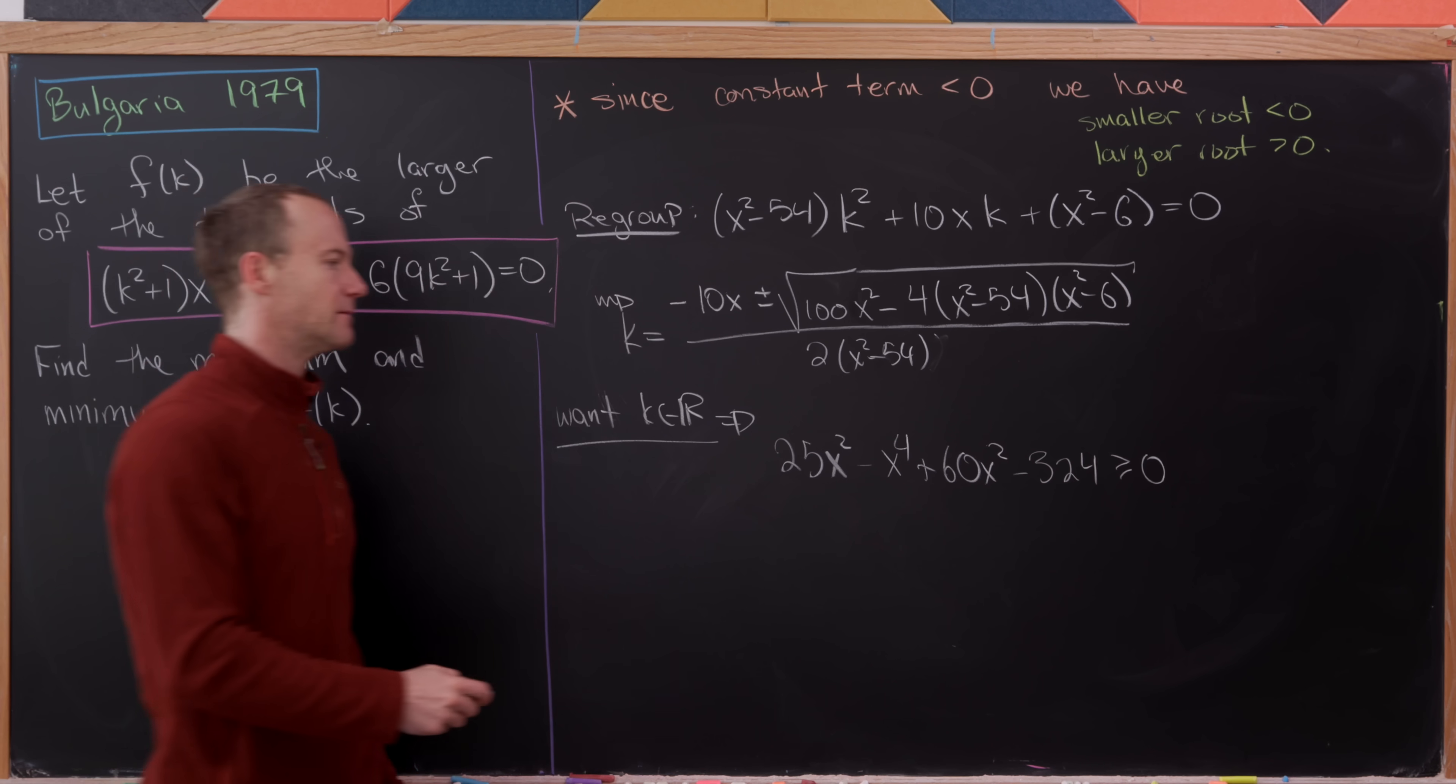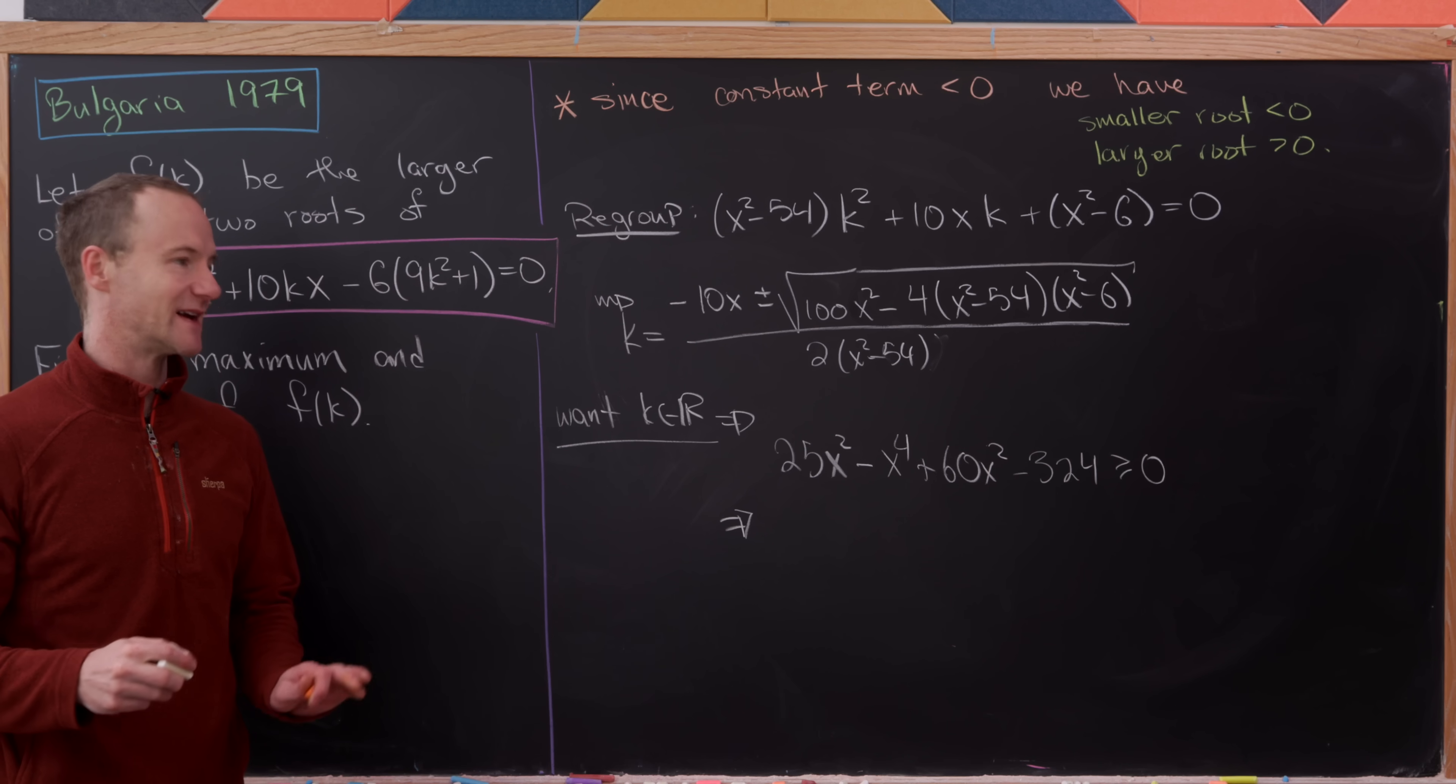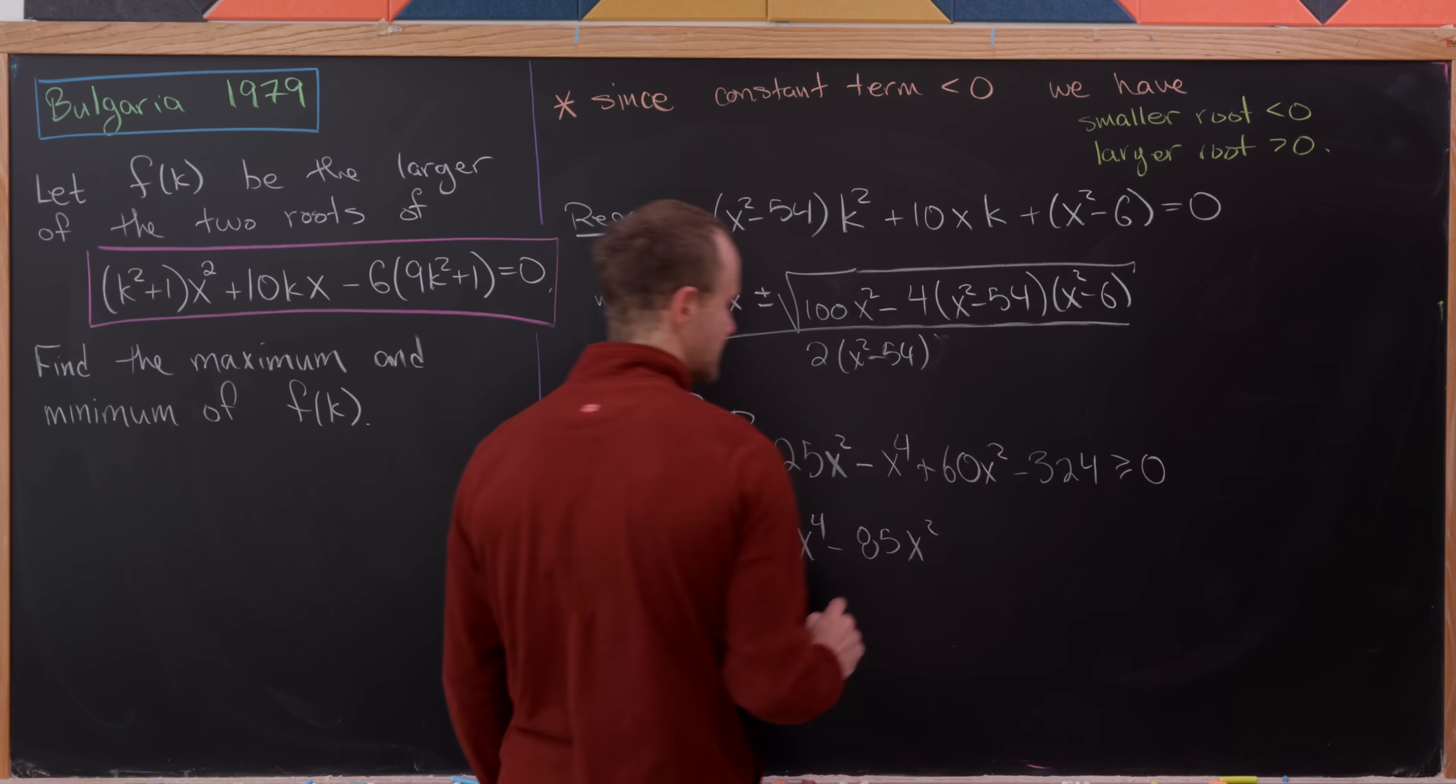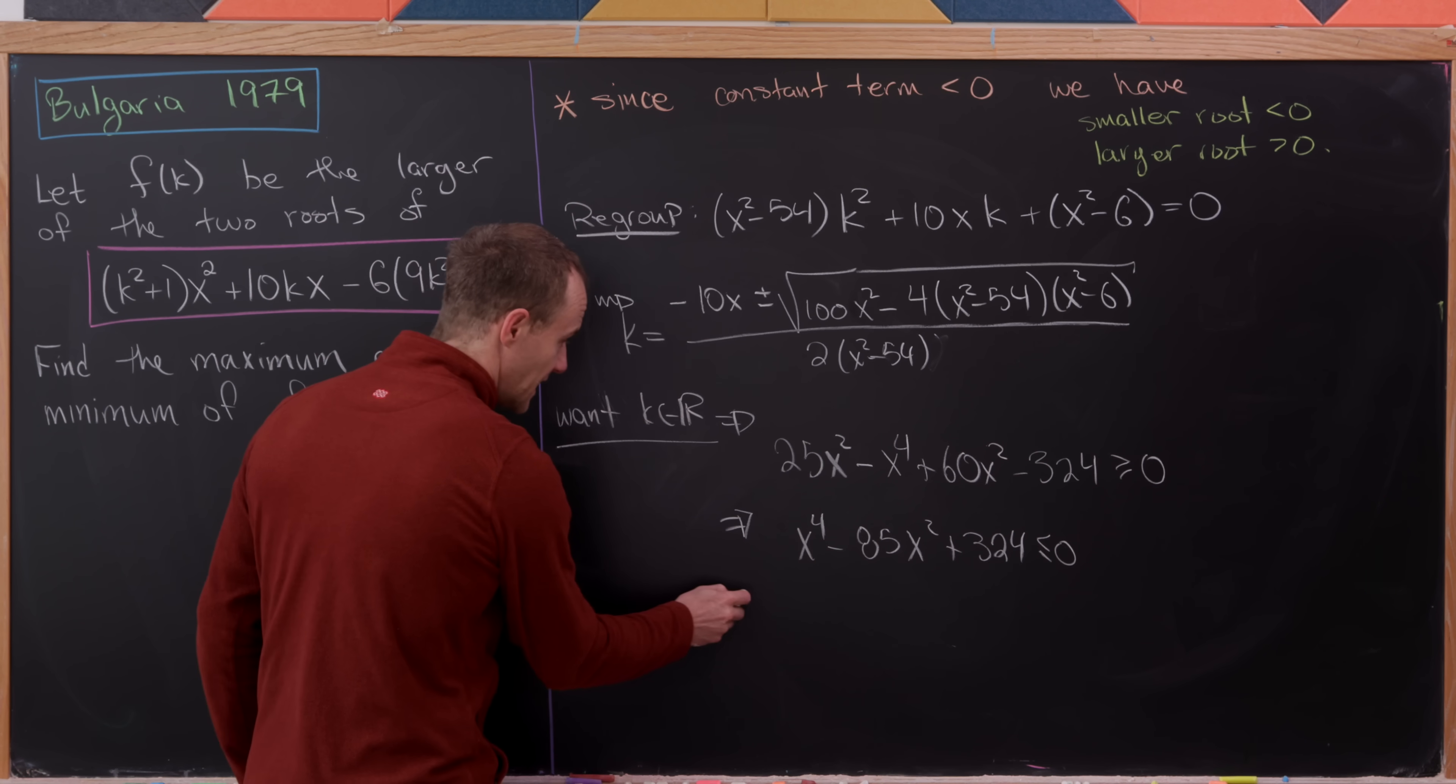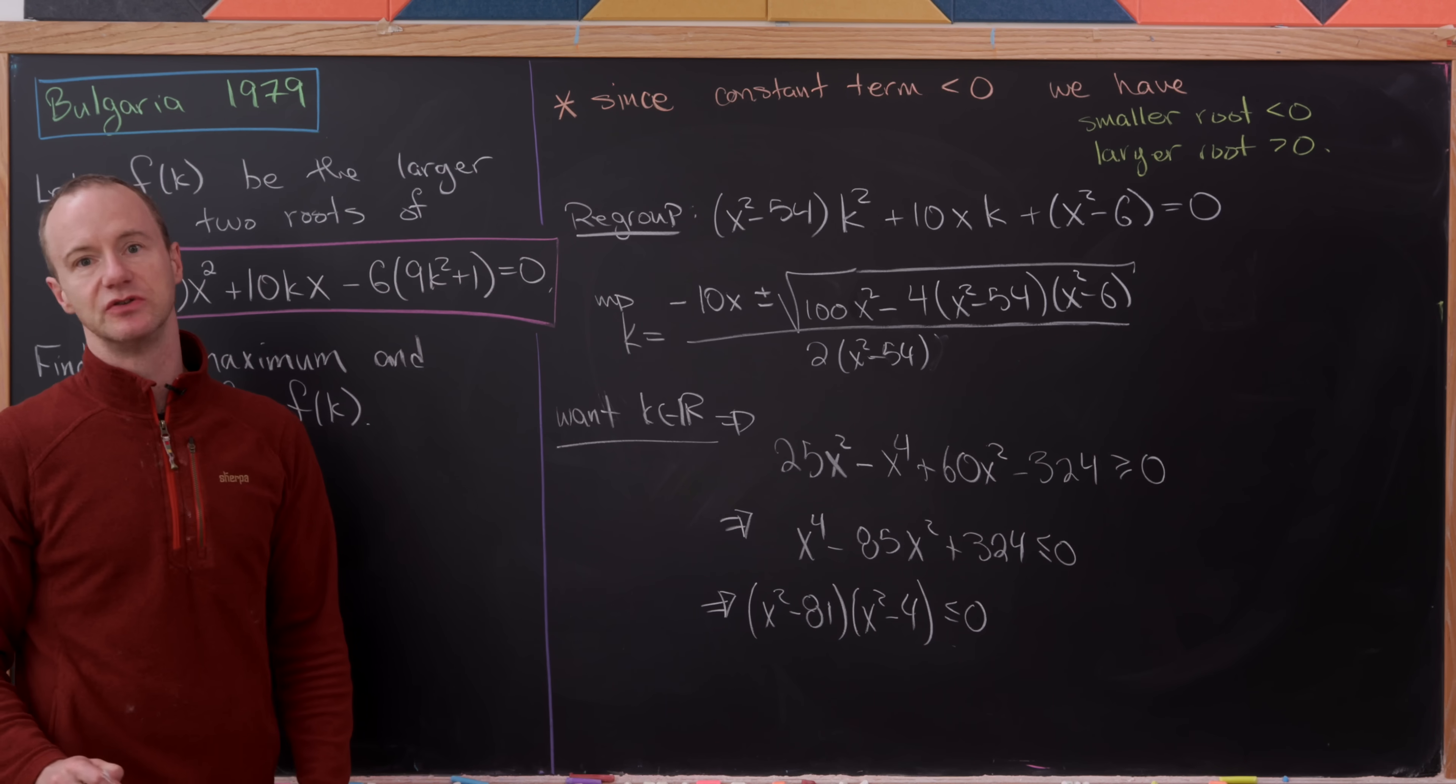From here we can combine terms, and we might as well multiply by -1 to flip this so the highest degree term is positive. That leaves us with x⁴ - 85x² + 324 ≤ 0. That's the inequality we're looking at now. This actually factors nicely: (x² - 81)(x² - 4) ≤ 0.